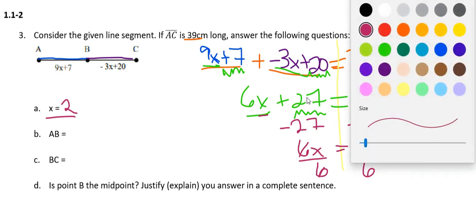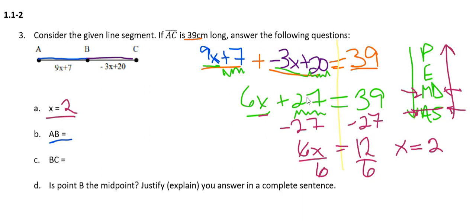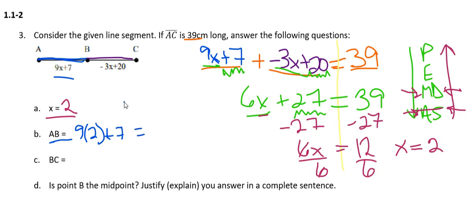Now my job is to answer the next two questions. For the length of AB — the left piece with equation 9x plus 7 — now that I know x is 2, I multiply 2 by 9 to get 18, then add 7 to get 25. So AB is 25 centimeters. That means the left side of my line segment is 25 centimeters.